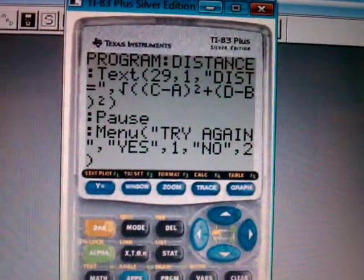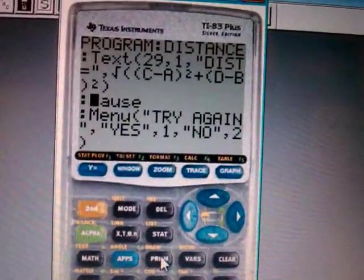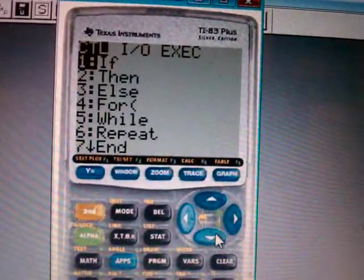Now finding a Pause might be a little bit hard, but actually it really isn't. You just go to Program—it should be number 8. So there's a Pause.